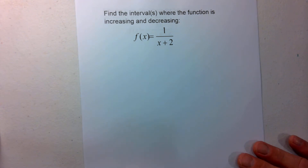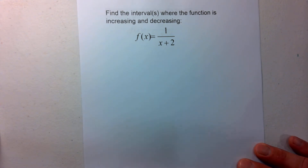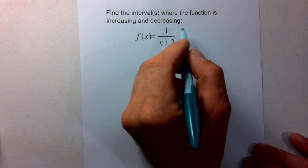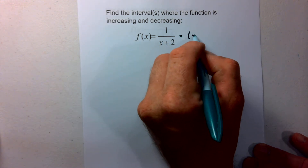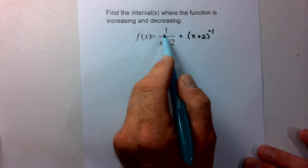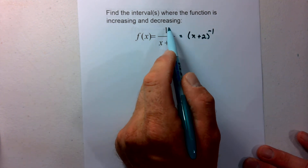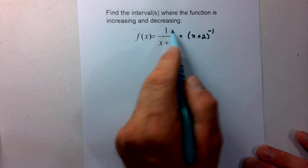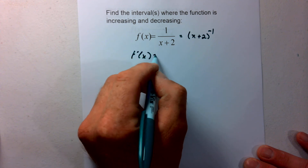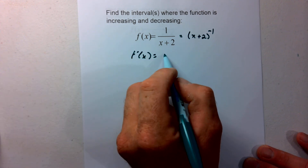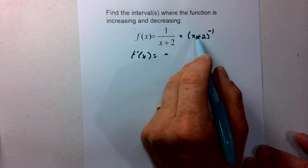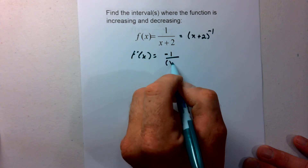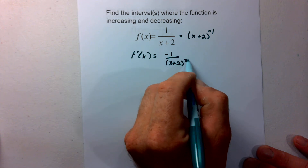I have one more rational example, then we'll get into some radicals. We have the function 1 over (x+2). We can bring this to the top as (x+2) to the negative first. If there were an x in the numerator we'd use the quotient rule, but since it's just a constant, we can bring it to the top. So f prime of x is the derivative: negative 1 over (x+2) squared.